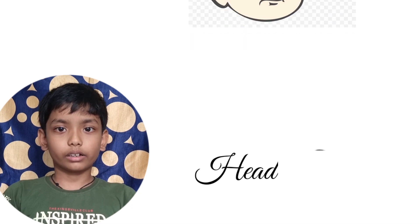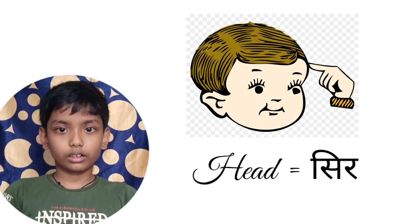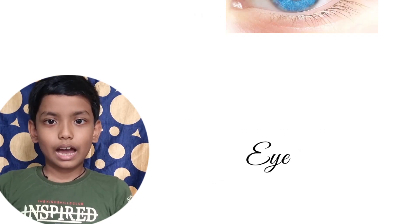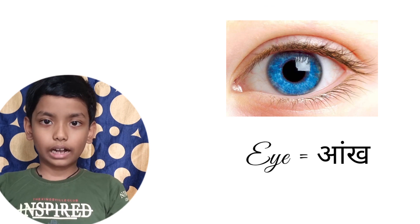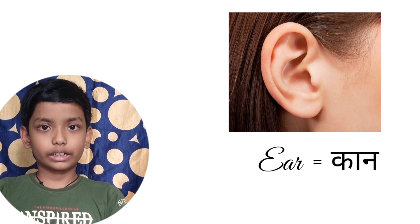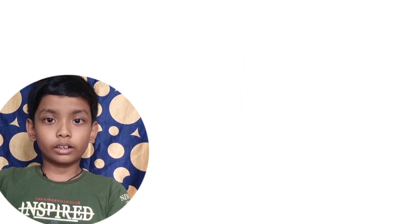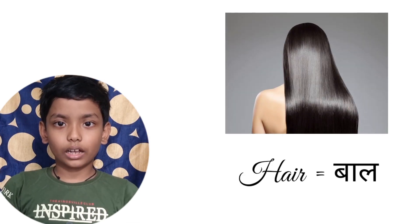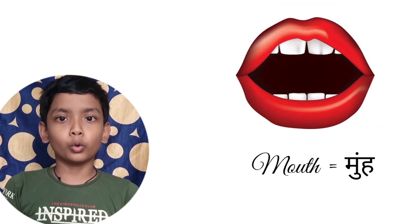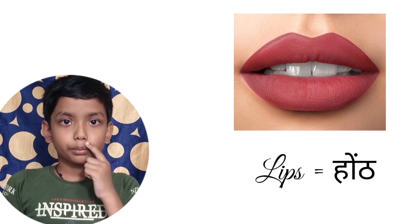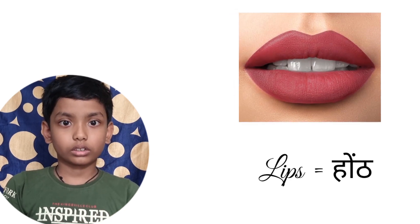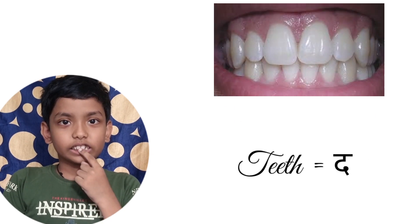Body part number one is head, which we call the 'seer'. Body part is eyes, which we call the 'arc'. Ear, nose, neck, and hair — here we call the nose, and here we call the to-TORY.